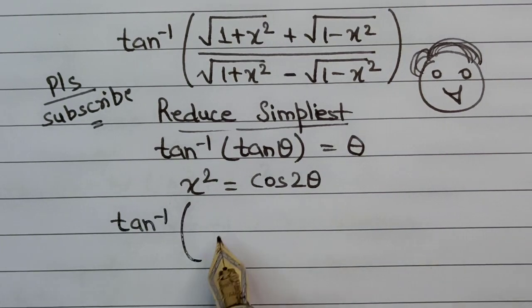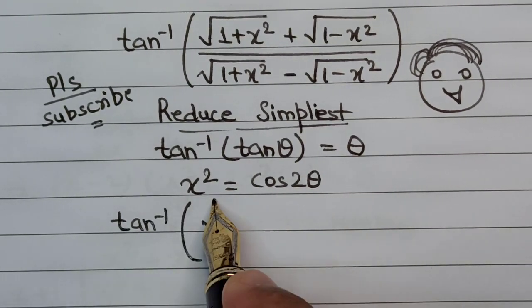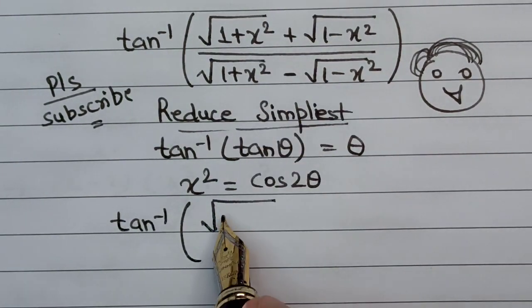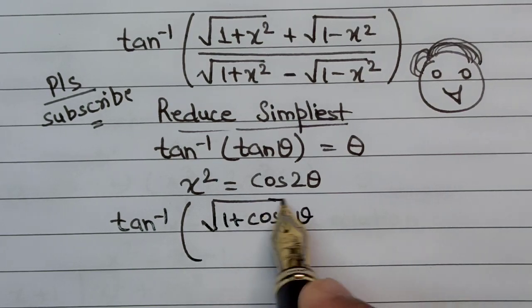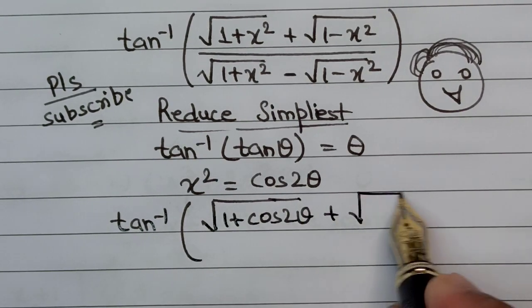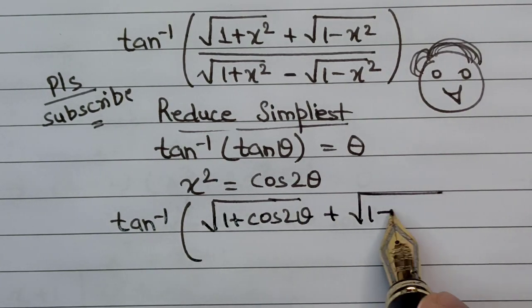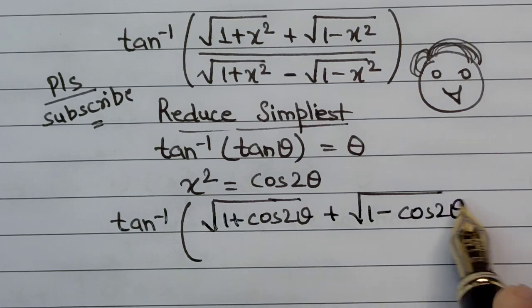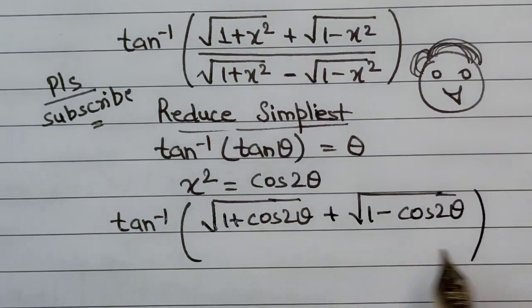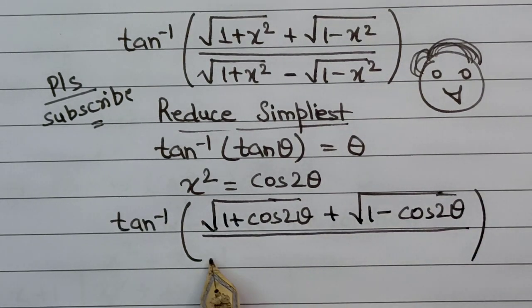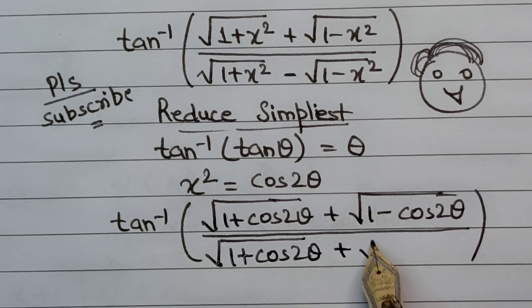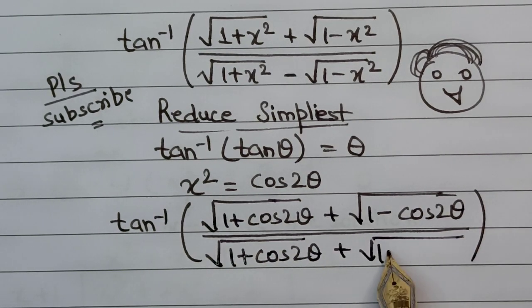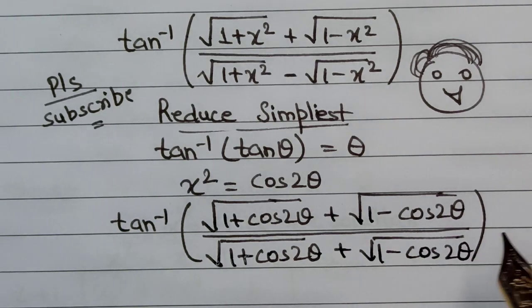In place of x², we now write: tan inverse of (√(1 + cos 2θ) + √(1 − cos 2θ)) divided by (√(1 + cos 2θ) − √(1 − cos 2θ)).